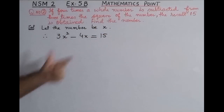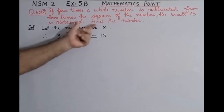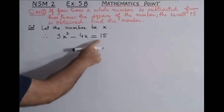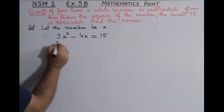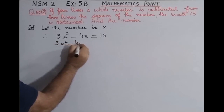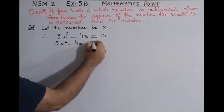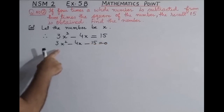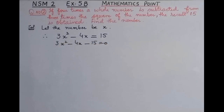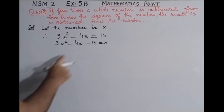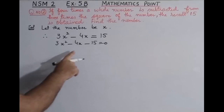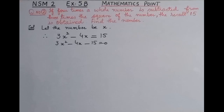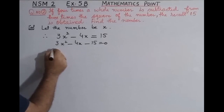From this equation we rearrange to get 3x² - 4x - 15 = 0. We apply the middle term break: we need two numbers that multiply to give -45 and add to give -4. Those numbers are -9 and +5. So we write minus 9x and plus 5x as the middle terms.